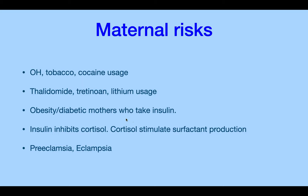Obese and diabetic mothers who take insulin are at risk for having a child who develops type 1 diabetes. Additionally, insulin inhibits cortisol, and cortisol stimulates surfactant production. Other risks include preeclampsia and eclampsia — eclampsia being the truly severe risk of death.